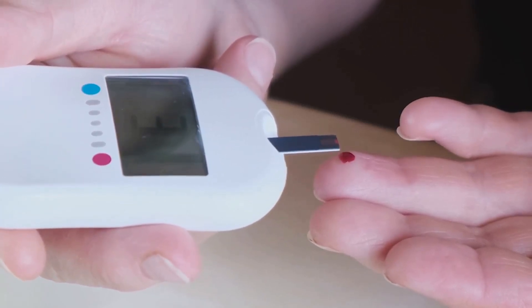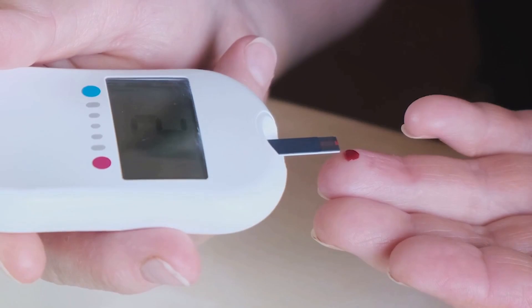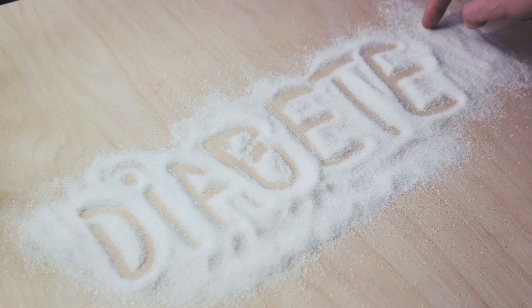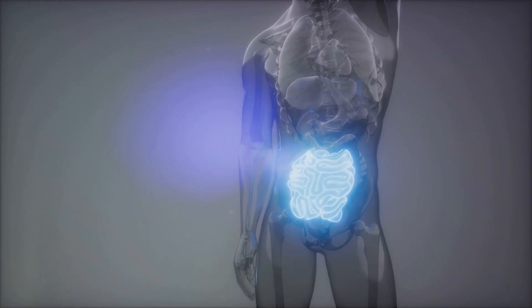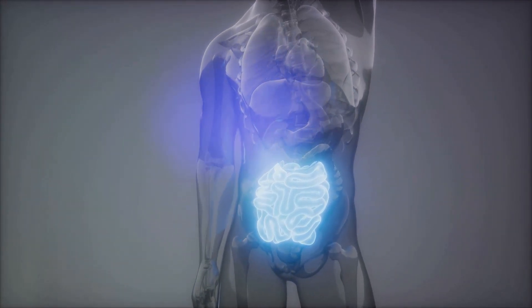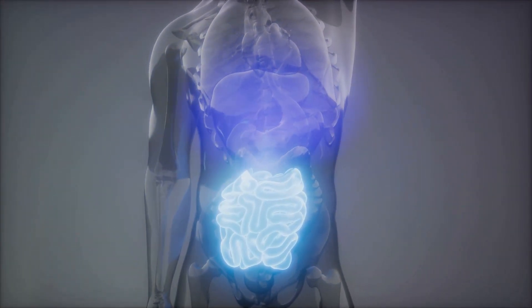Next up is lipotoxicity. Elevated levels of free fatty acids, often associated with insulin resistance, can be toxic to beta cells. This toxicity can further diminish the cell's insulin producing capabilities.